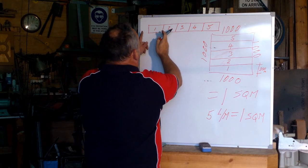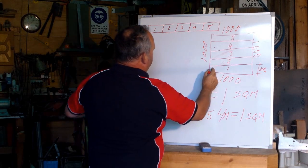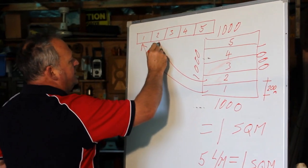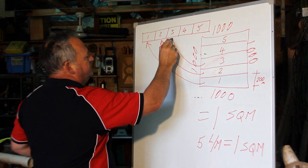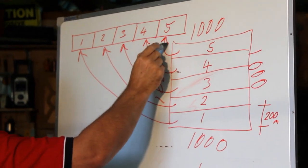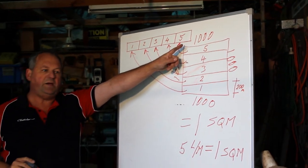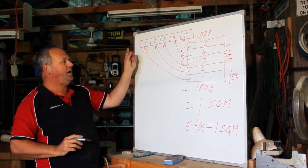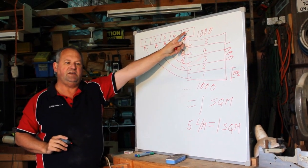So five metres, each one of these, so this one becomes this one, this one becomes this one, this, this one, this, this one, and finally this one. So my five square metres, if I put them end to end become five lineal metres.